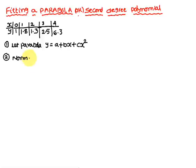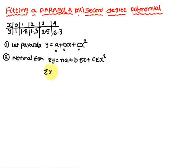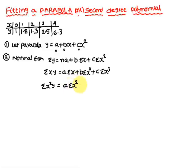Next, we consider the normal equations. To find the values of a, b, and c to frame the parabola, we require three normal equations: (1) Σy = na + bΣx + cΣx²; (2) Σxy = aΣx + bΣx² + cΣx³; (3) Σx²y = aΣx² + bΣx³ + cΣx⁴. These are the three normal equations.